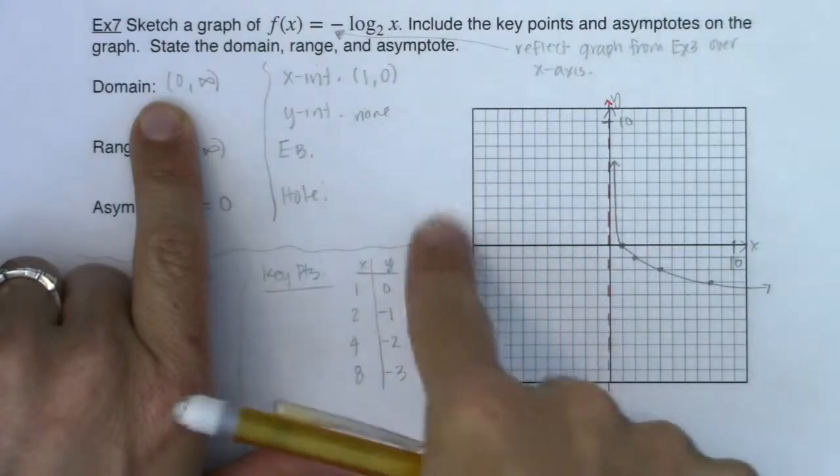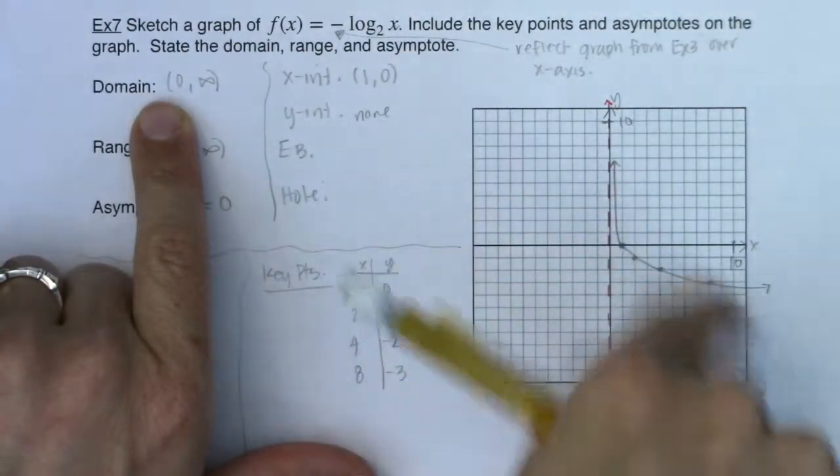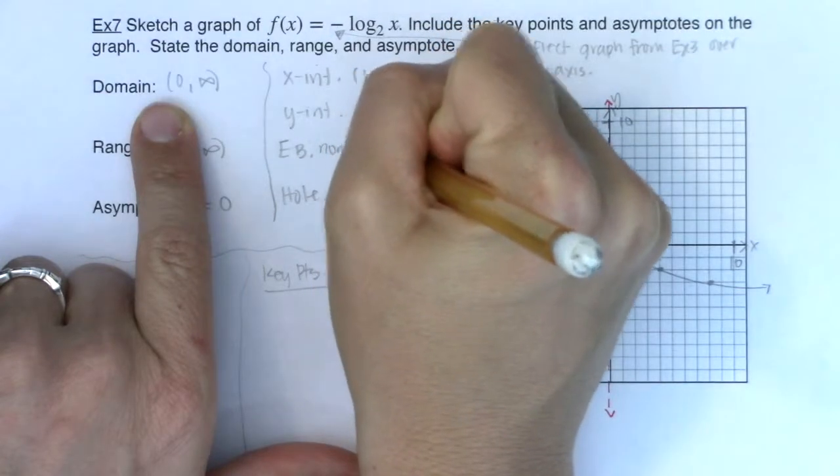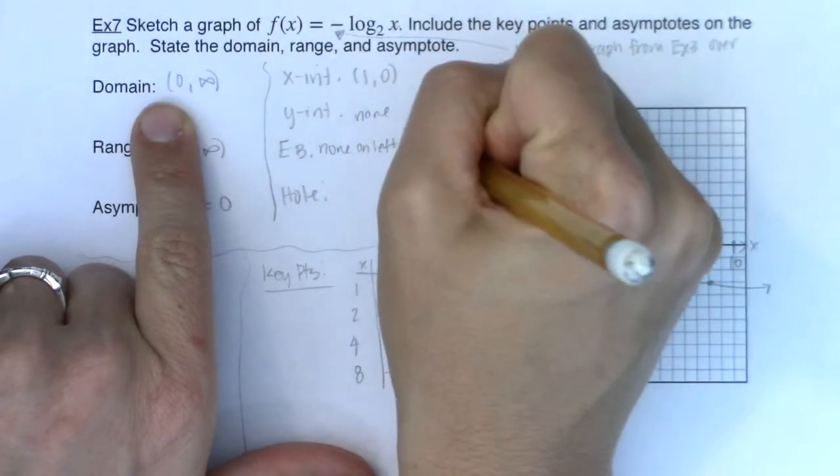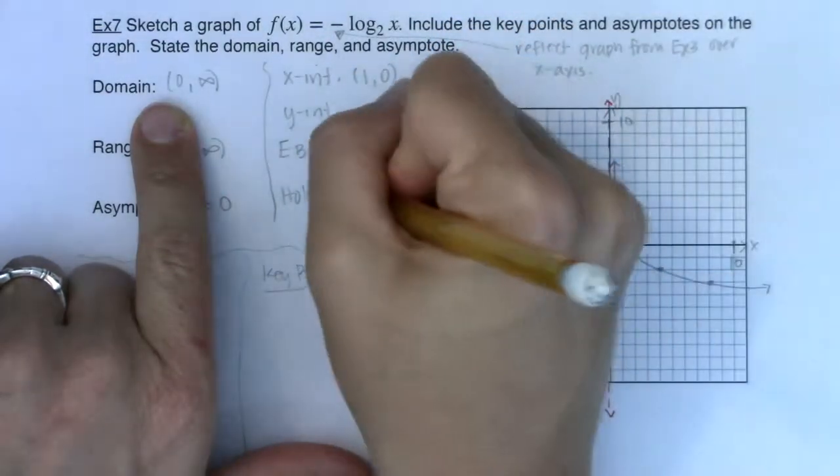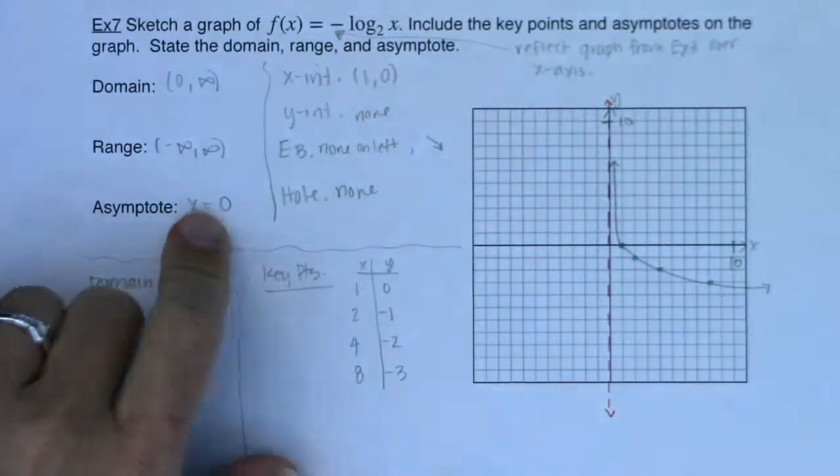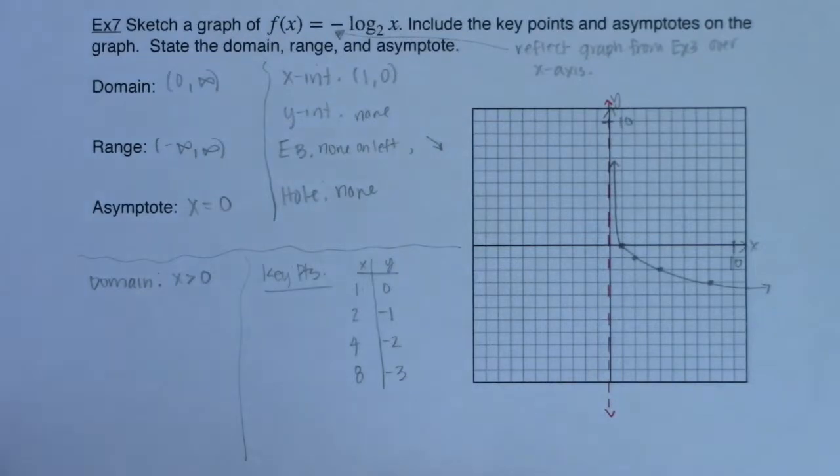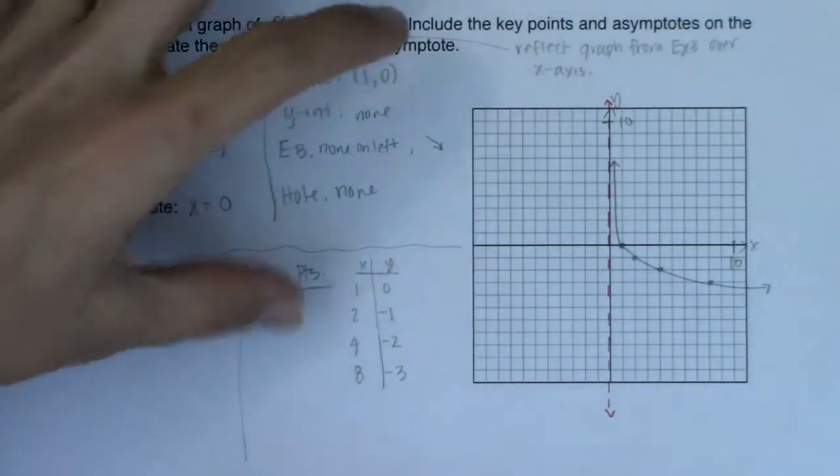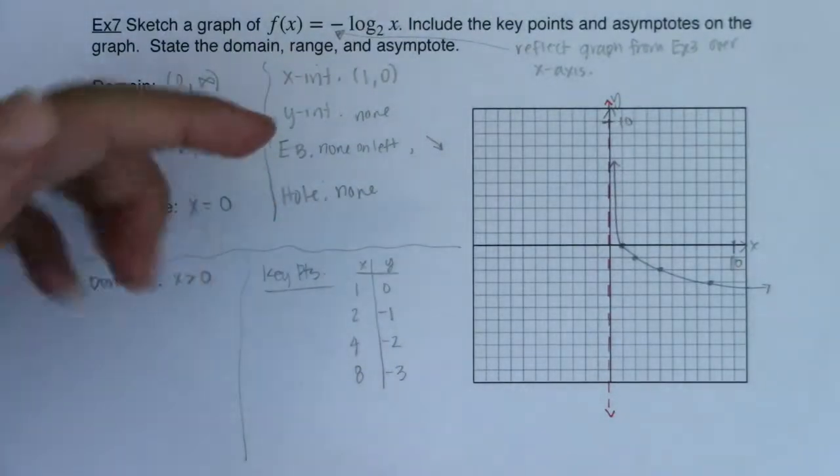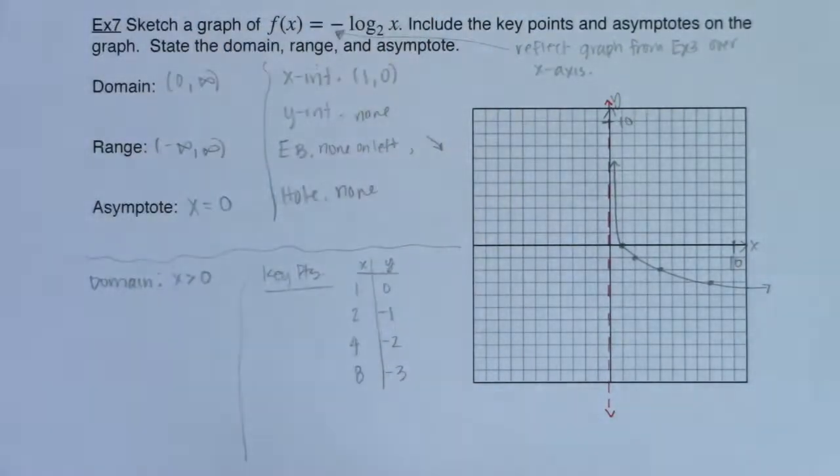For my end-behavior, nothing on the left. Down arrow on the right. And I had no holes. And again the reason I have no holes is if you look at this argument there's no fractions in there. And if there's no fractions I'm not going to have a hole. You have a hole when there's a fraction in your argument or in your function and you have a factor common to the numerator and denominator.